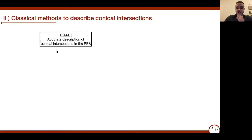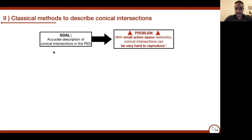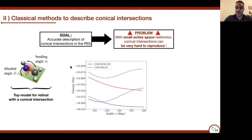Our goal is to accurately describe the conical intersection in the potential energy surface. But you have to know that most of the time, if you are dealing with a complex system and you use small active spaces—such as what we usually do in quantum computing with near-term devices—conical intersections can be very hard to reproduce. To demonstrate this, I consider the formaldimine molecule, which is a well-known toy model for the more complex retinal molecule. This molecule is known to contain a conical intersection in its electronic spectrum.